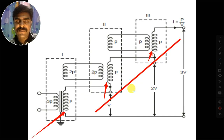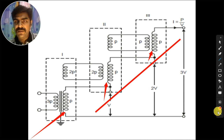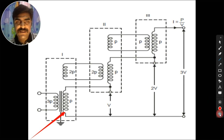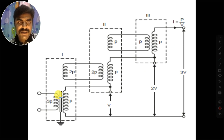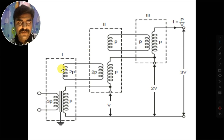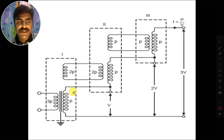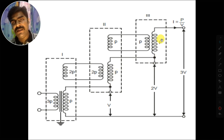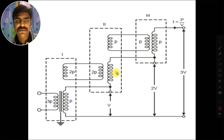The output voltage will be the sum of these three secondaries. In the first stage, this is the applied voltage. The secondary of the first stage transformer is connected in series with the secondary winding of the second stage transformer, and the secondary of the third stage transformer is connected in series with that second stage.